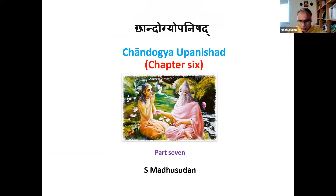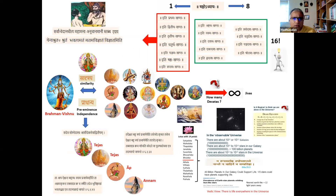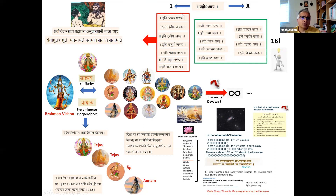Good evening everyone and welcome to Part 7 of Chandogya Upanishad. Let's do a brief recap as to where we are at this point of time. Chandogya Upanishad is part of Samaveda. The Upanishad has got 8 chapters and we are focused on the 6th chapter, Shashto Adhyayaha. Within the 6th chapter, we have completed 7 sections or 7 khandhas, and there are about 9 more to go.